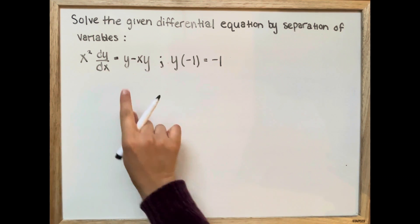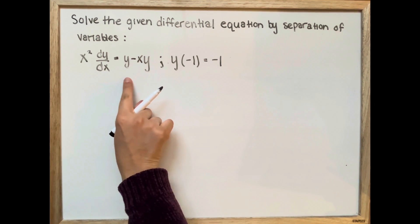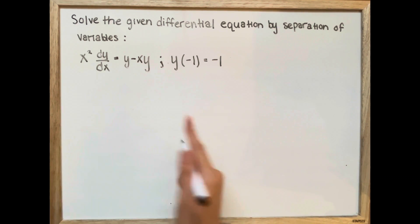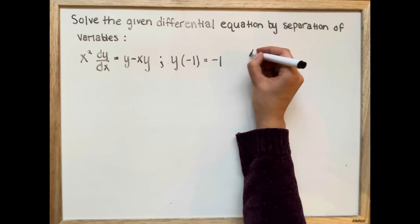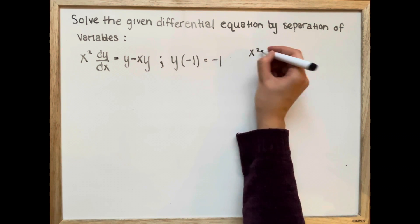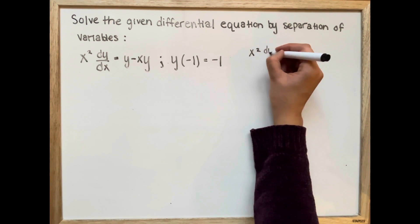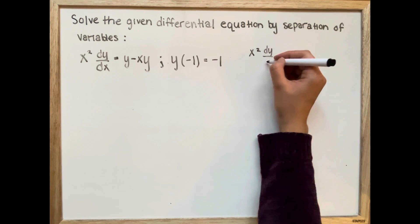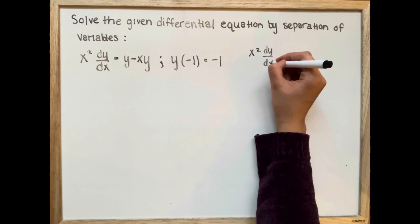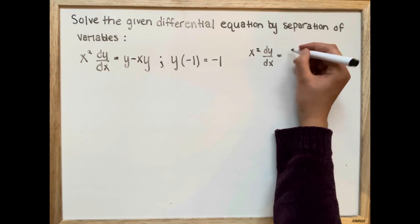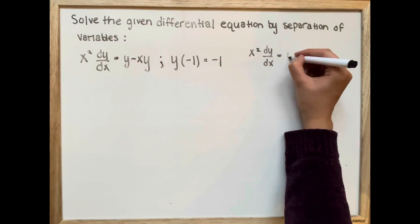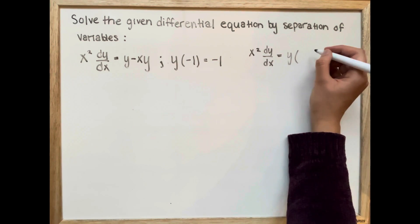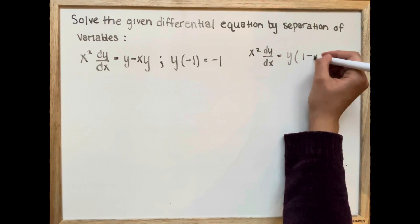First, we're going to simplify the right side. We're going to write x squared dy over dx is equal to, so we're going to factor out our y — y multiplied by 1 minus x.